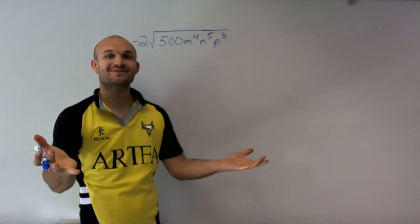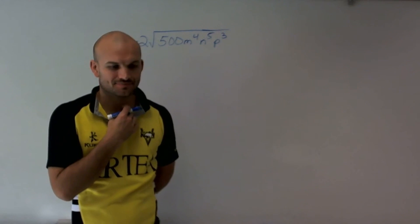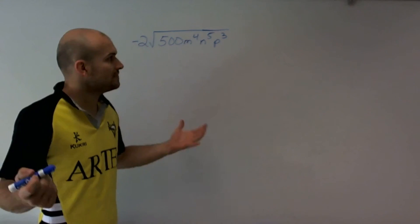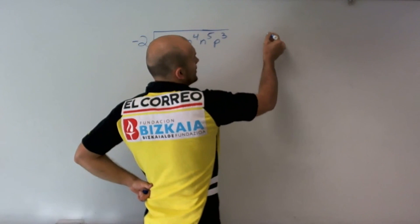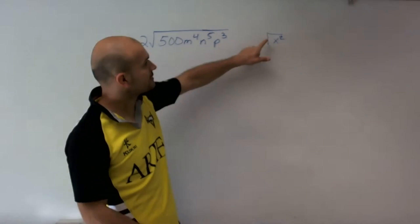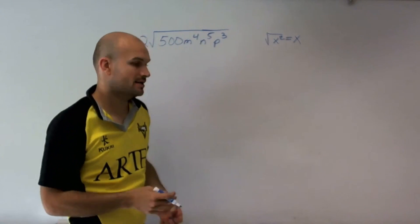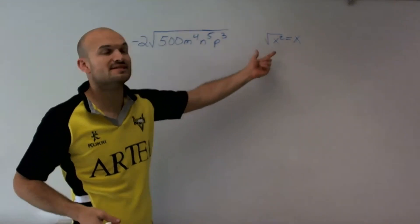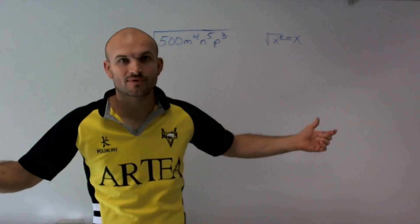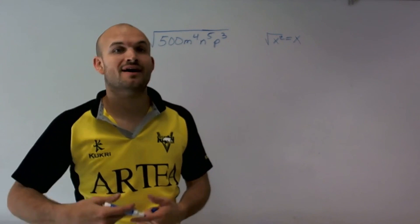What I want to do is show you how to simplify this radical expression. One thing I want to go through is understanding the square root of a square number — the square root of a square number is just going to equal that number. There are special types of numbers that we can take the square root of, which we call our square numbers. Those numbers are like 4, 9, 16, 25, 36.